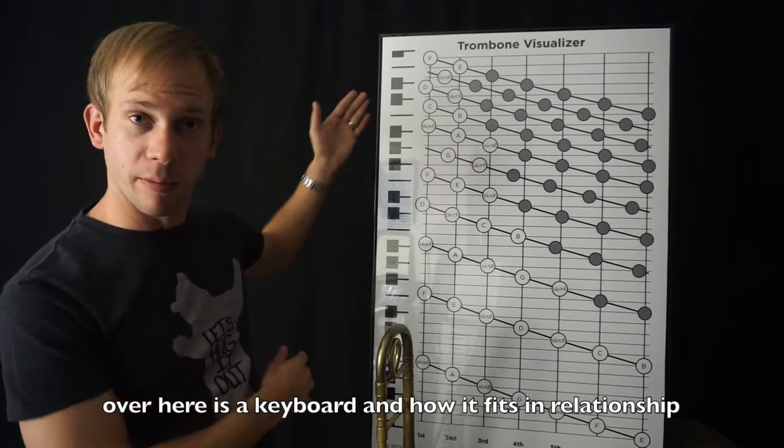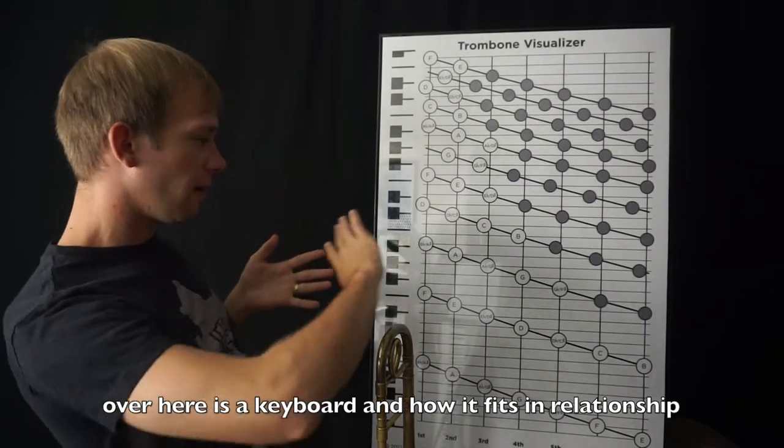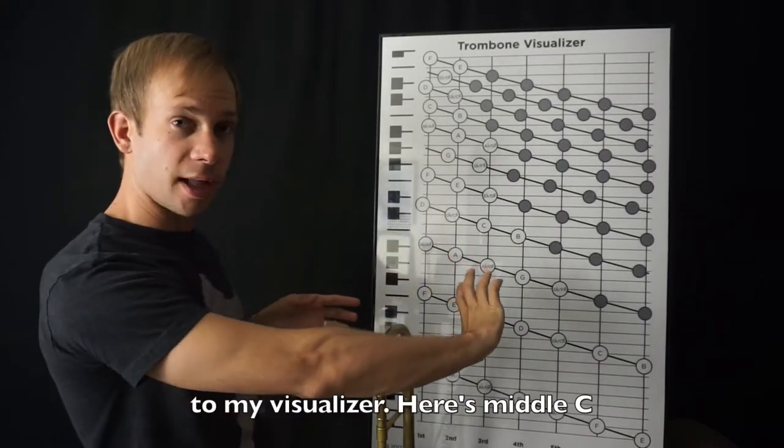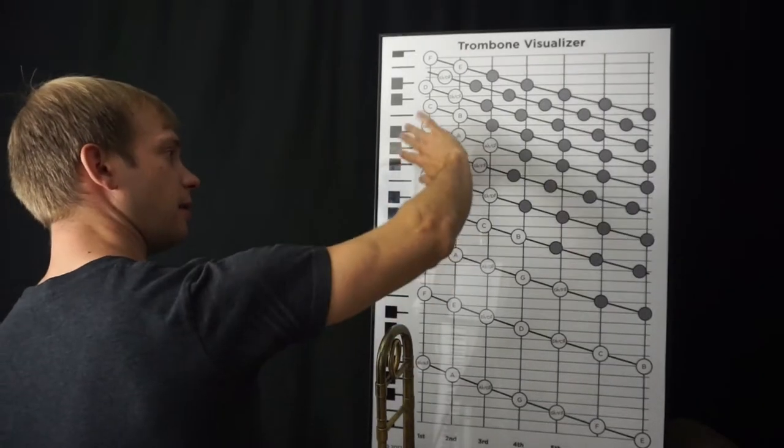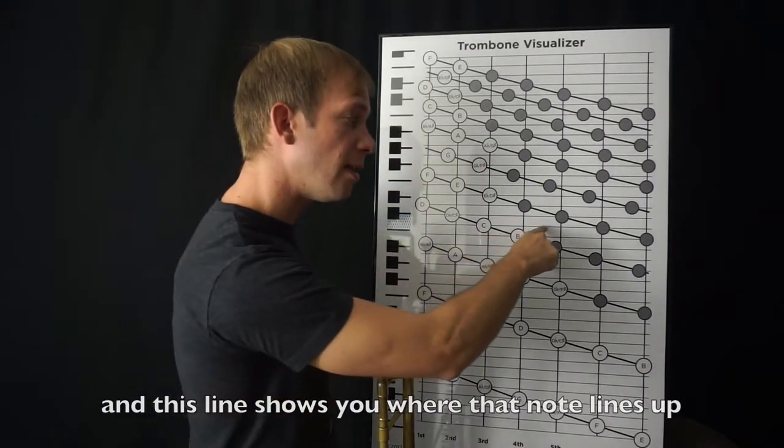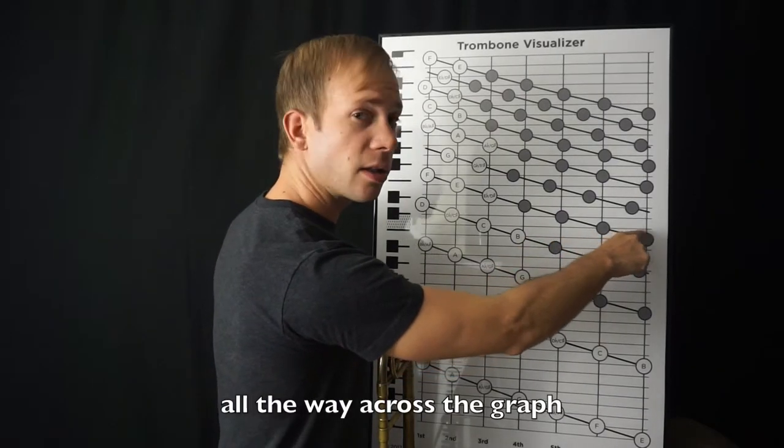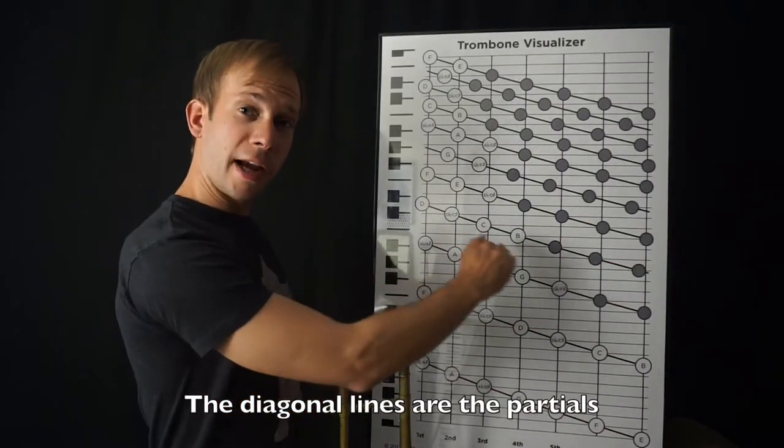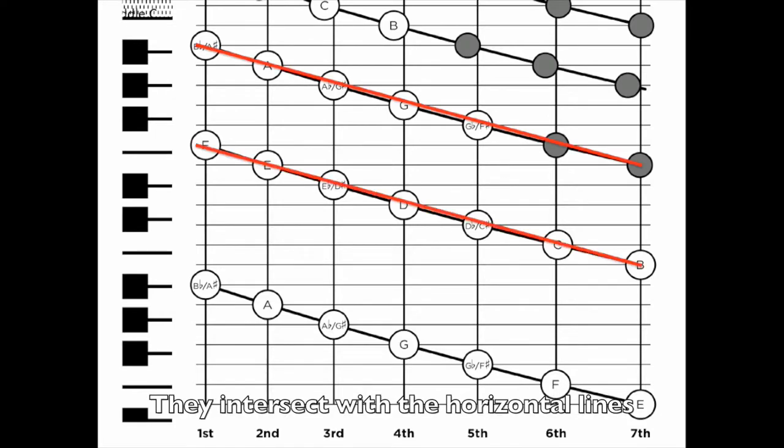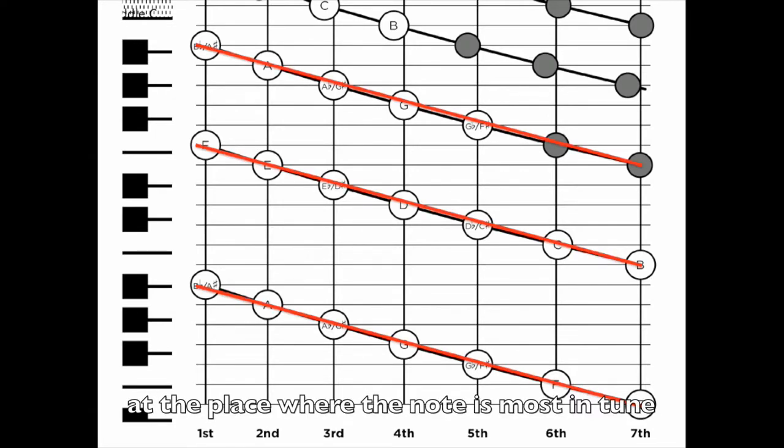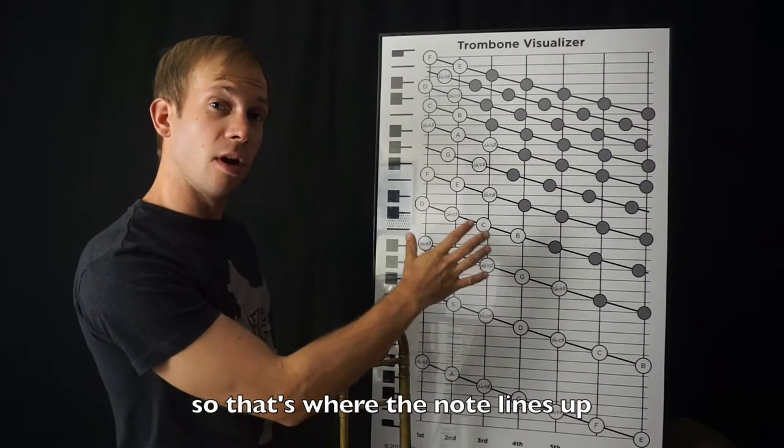This over here is a keyboard and how it fits in relationship to my visualizer. Here's middle C and this line shows you where that note lines up all the way across the graph. These diagonal lines are the partials. They intersect with the horizontal lines at the place where the note is most in tune. So that's where the note lines up.